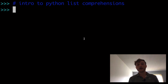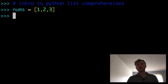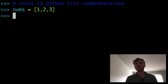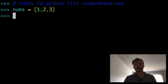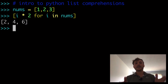What I mean by a list comprehension — let's say we had some numbers: one, two, three. How would you multiply these numbers by two and return a new list of two, four, six? Well, the easiest, most Pythonic way is to use a list comprehension. We start off with square brackets and do `i * 2 for i in nums`. And that is your basic list comprehension.